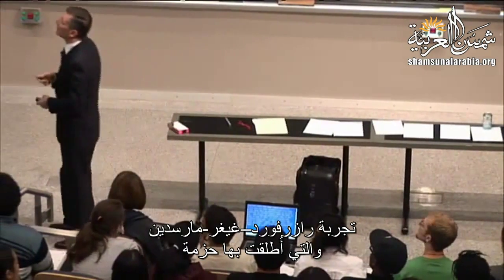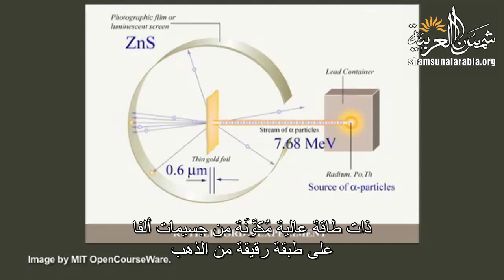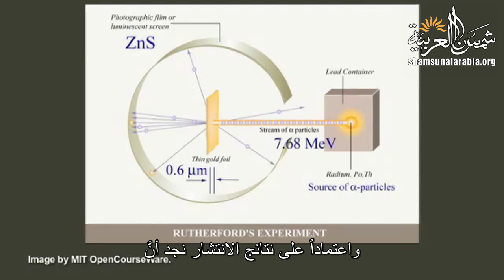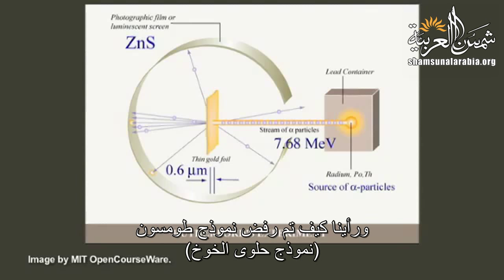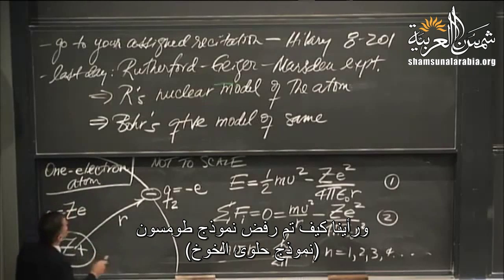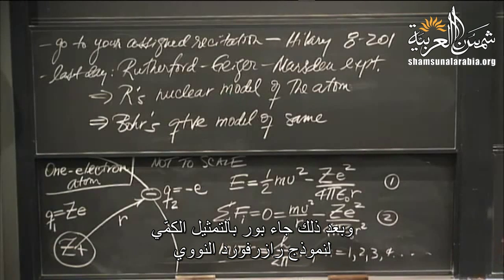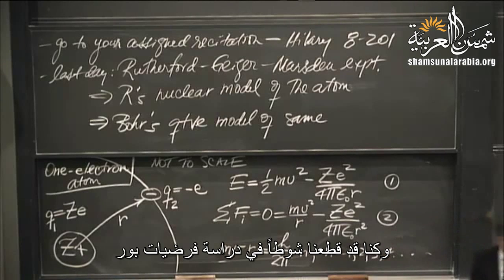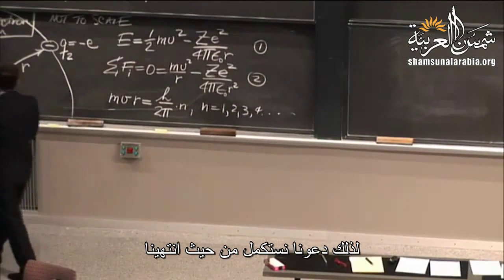Last day we looked at the Rutherford-Geiger Marsden experiment, in which a high-energy beam of alpha particles bombarded a thin gold foil. On the basis of the scattering results — namely, most particles went through with minor scattering and a tiny fraction were scattered through large angles — the Thomson plum pudding model was rejected in favor of Rutherford's nuclear model. Subsequently, Bohr came up with a quantitative representation of the Rutherford nuclear model, and we were partway through that treatment.